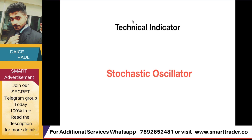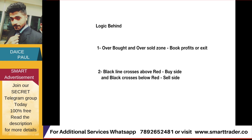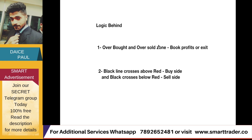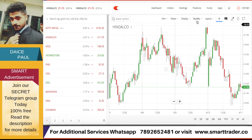There are a few key logics behind the stochastic oscillator. Keep two things in mind: first, there is an overbought and oversold zone which helps you book profits or exit. Second, when the black line crosses above the red line, you consider a buy; when the black line crosses below the red line, you consider a sell. I'll show you this practically on the chart so that you get a clear idea. Let's now apply the stochastic oscillator.